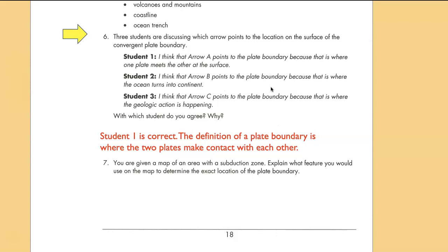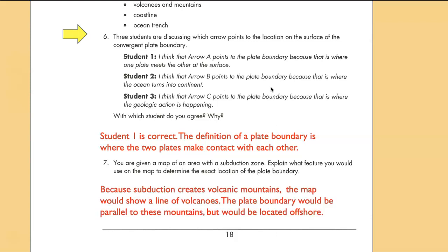Finally, you're given a map of an area with a subduction zone. Explain what feature you would use on the map to determine the exact location of the plate boundary. Because subduction is going to create these volcanic mountains, the map is probably going to show a line of volcanoes. And the plate boundary would be parallel to these mountains of volcanoes, but they would be located offshore.